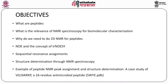The objectives of these modules are to tell you what are peptides, what is the relevance of NMR spectroscopy for biomolecular characterization, why we need to do 2D NMR for peptides, what is NOE and the concept of transfer NOESY, what are sequential resonance assignments for peptides, how the structure is determined through NMR spectroscopy, and then we will take an example of peptide NMR peak assignment and structure determination — a case study of VG16KRKP, a 16-residue antimicrobial peptide, deposited in the PDB as 5WYE.PDB.